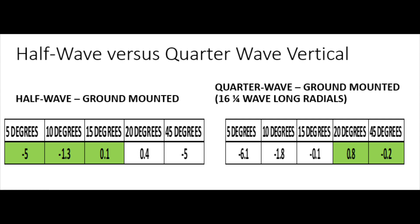If it's in green, it means that antenna is slightly better than the other. So for example, on the ground mounted half wave at 5 degrees off the horizon, we can see it has a gain of minus 5 dB. And if you look on the right-hand side, the quarter wave at 5 degrees is at minus 6.1. So at 5 degrees off the horizon, the ground mounted half wave is slightly better. Now we're only talking about a dB difference or less in most of these cases. As we can see, a ground mounted half wave is slightly better than a quarter wave ground mounted antenna at 5, 10, and 15 degrees off the horizon.